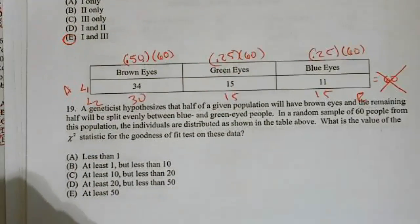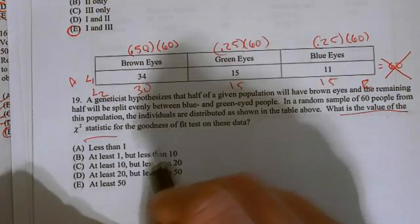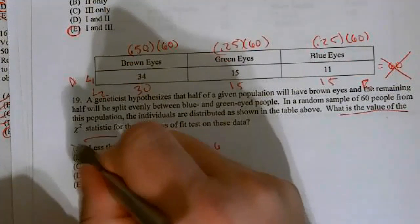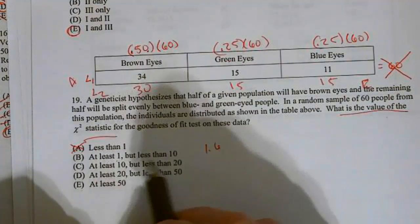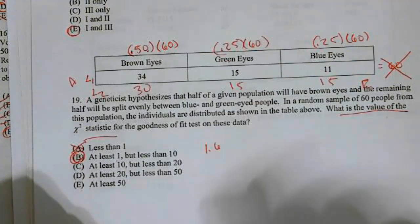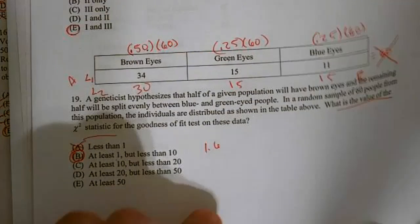And I get 1.6. So, what is the value of the chi-squared statistic? Well, my chi-squared statistic is 1.6. So, it's not less than one. It is at least one, but it's less than 10. Because it was 1.6, which is greater than one, and 1.6 is less than 10.